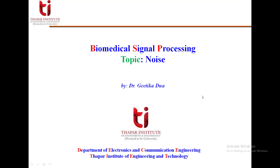Hello dear students. Now we will start another topic: noise in biomedical signal recording. We have studied different systems of our body and seen different types of signals — ECG, EEG, and EMG signals. Now we will look at different kinds of noises, and in coming lectures we will also see the different sources of noise in those signals. We will mainly consider random noise.